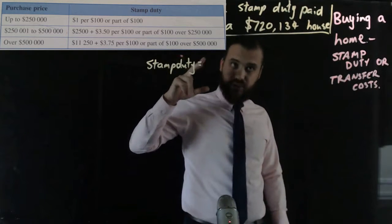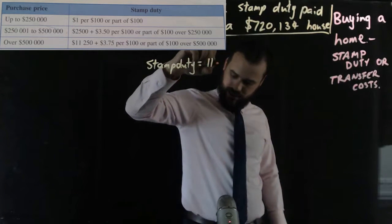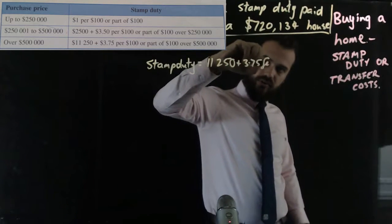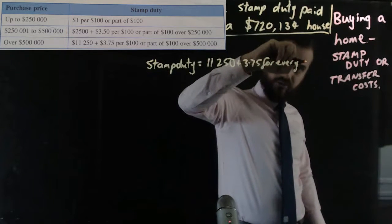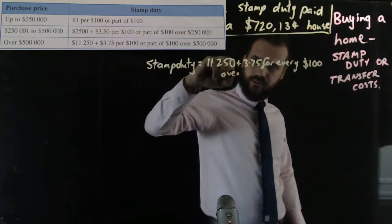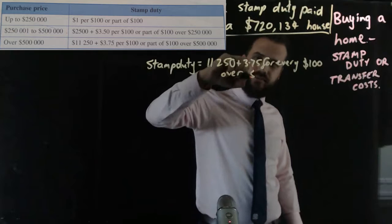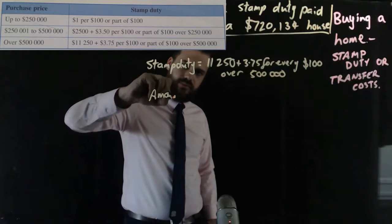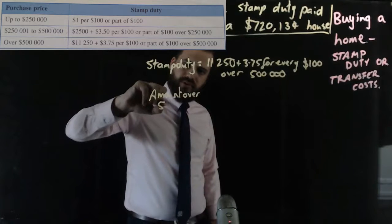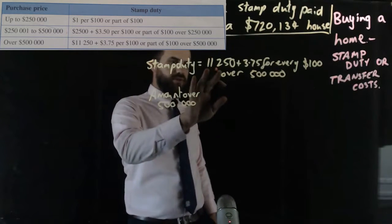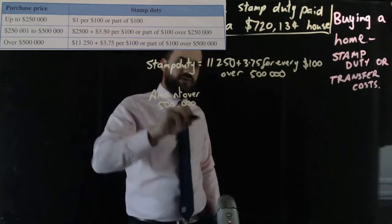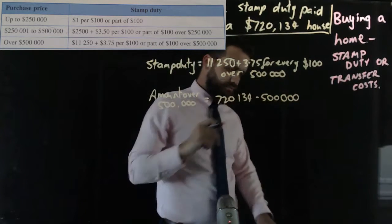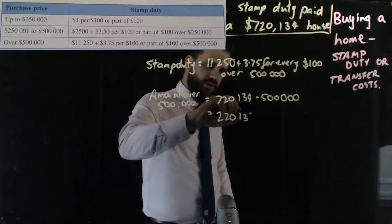It's over five hundred thousand dollars, so stamp duty equals eleven thousand two hundred and fifty dollars, plus three dollars seventy-five for every hundred dollars over five hundred thousand. The amount over five hundred thousand is the cost of the house minus five hundred thousand, which gives us two hundred and twenty thousand, one hundred and thirty-four dollars.